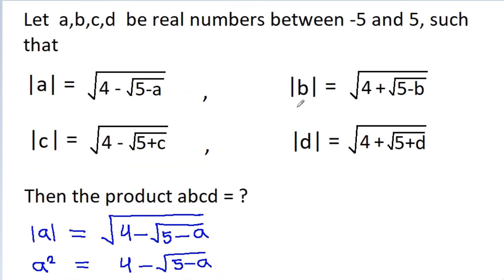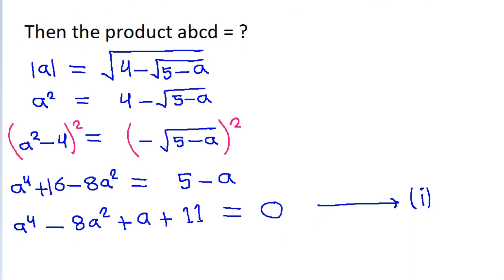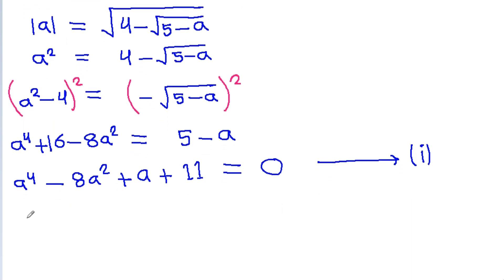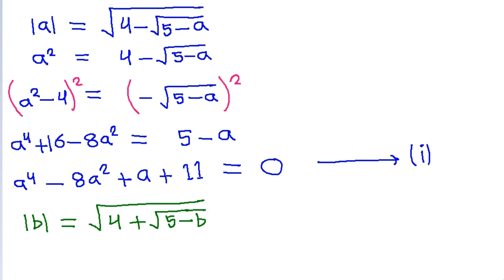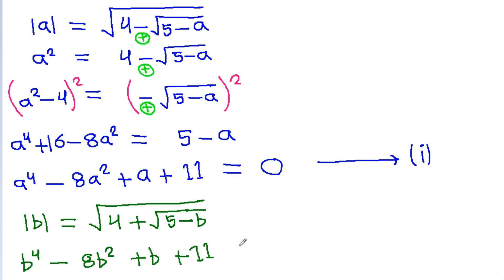We have mod b equals root under (4 plus root(5 minus b)). Here we have plus instead of minus, so we get plus here instead of minus. If we square both sides, we get a similar equation: b⁴ minus 8b² minus b minus 11 equals 0. Suppose this is equation 2.